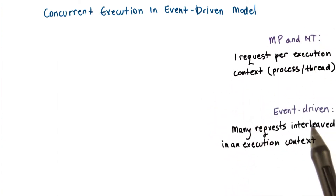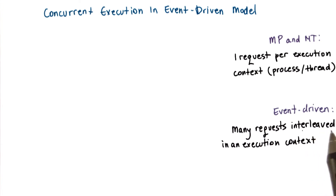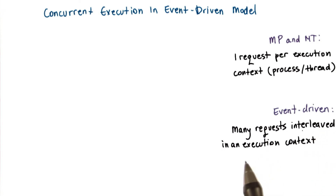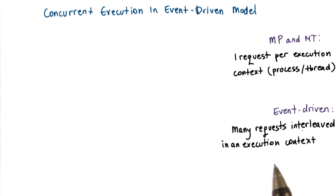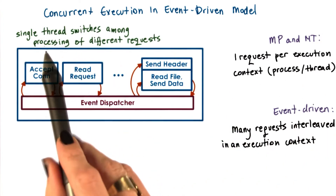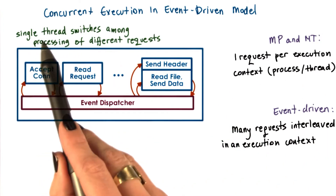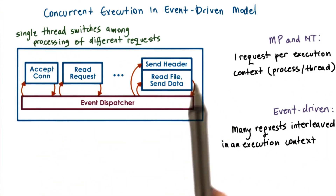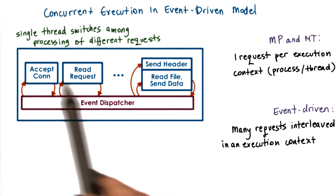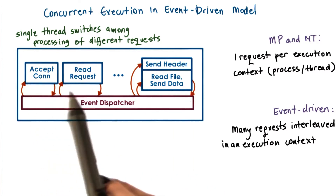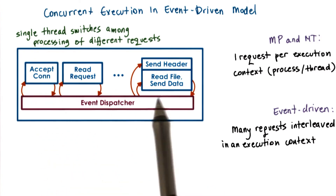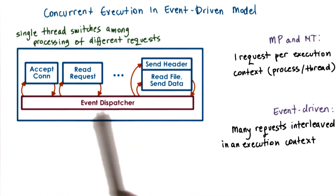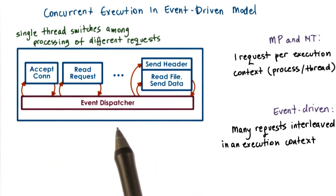The way the event-driven model achieves concurrency is by interleaving the processing of multiple requests within the same execution context. In the event-driven model, we have a single thread, and that single thread switches its execution among the processing required for different requests.